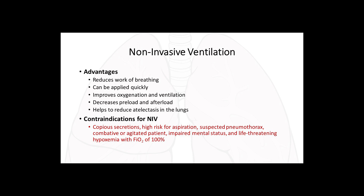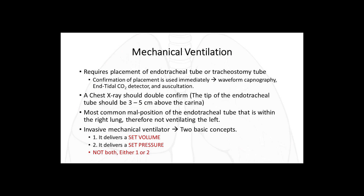Contraindications for non-invasive ventilation include copious secretions, high risk for aspiration, suspected pneumothorax, combative or agitated patient, impaired mental status, and life-threatening hypoxemia with FiO2 at 100%. Essentially, do not use it if the patient cannot protect their airway, if pneumothorax is suspected, if the patient is fighting, or if not responding to ventilation even at 100% oxygen. These are indications for invasive mechanical ventilation, which requires placement of an endotracheal tube or tracheostomy tube.